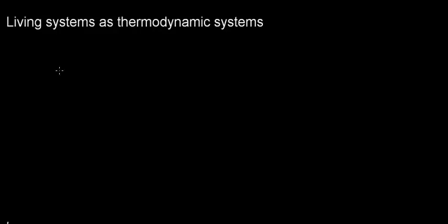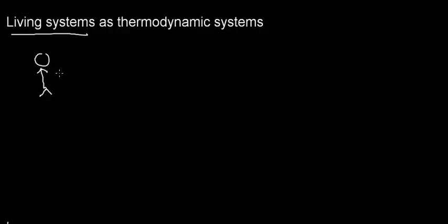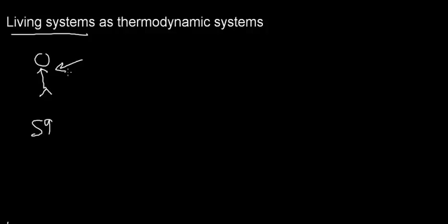Now let's apply the second law to living systems. A living system — a person — is a fairly ordered structure: bones, tissues, muscles, all very orderly, with specific cells differentiating into specific tissues. But I just told you entropy keeps increasing. So how can living systems get more and more ordered? If I look at this living system, which is very neat and ordered biologically, its entropy is going down — it's getting more ordered, not more disordered. How do I reconcile this with the second law that says entropy will always go up?